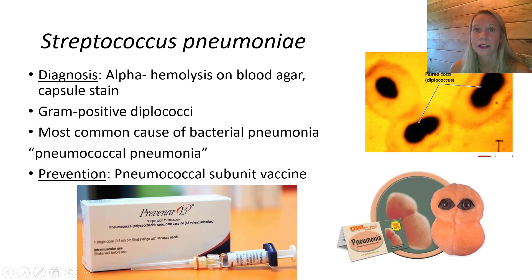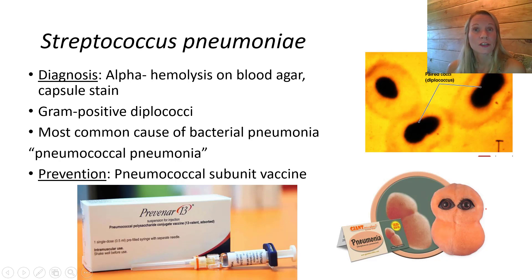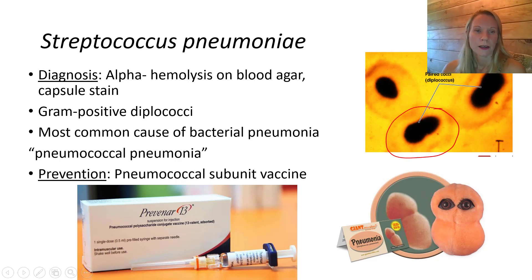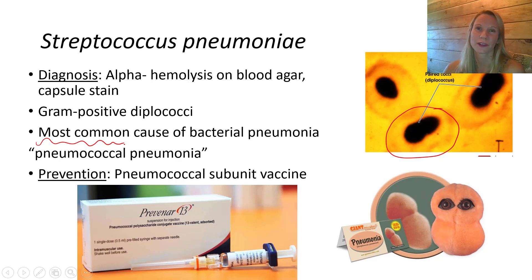The most common culprit is Streptococcus pneumoniae. It has an alpha-hemolytic pattern on blood agar, is capsule-positive, and its morphology is diplococci — paired cocci with a capsule halo. It causes pneumococcal pneumonia and is the most common cause of bacterial pneumonia. There is a preventative pneumococcal subunit vaccine, which is part of the vaccination schedule for children under five.